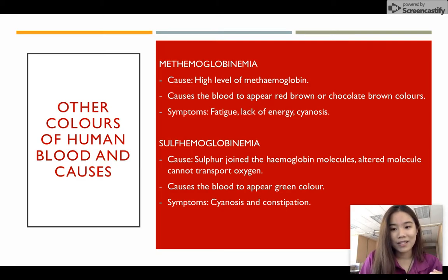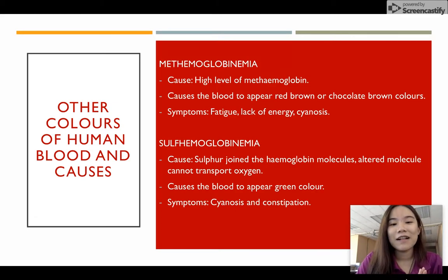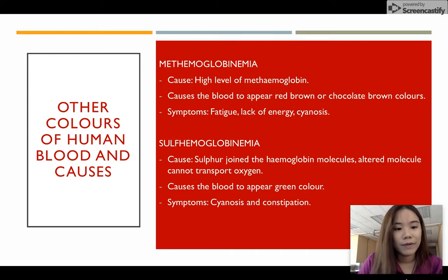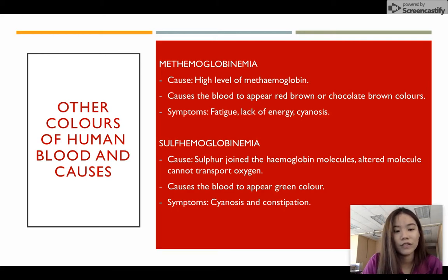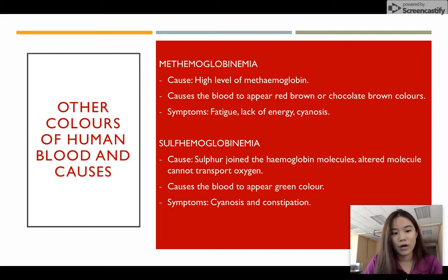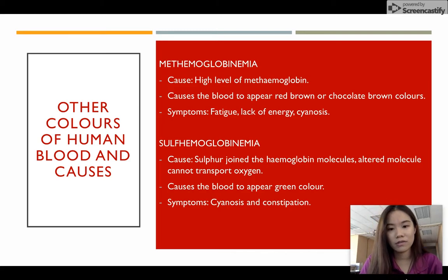Another situation which causes human blood to appear green is the disease called sulfhemoglobinemia. Sulfhemoglobinemia is caused by sulfur joining the hemoglobin molecules, after which the molecule cannot transport oxygen. It is usually caused by exposure to high doses of certain medications and chemicals. For example, a long-term overdose of sumatriptan, a migraine medication, reportedly caused one case of green blood discovered by doctors. The symptoms of sulfhemoglobinemia include cyanosis and constipation.